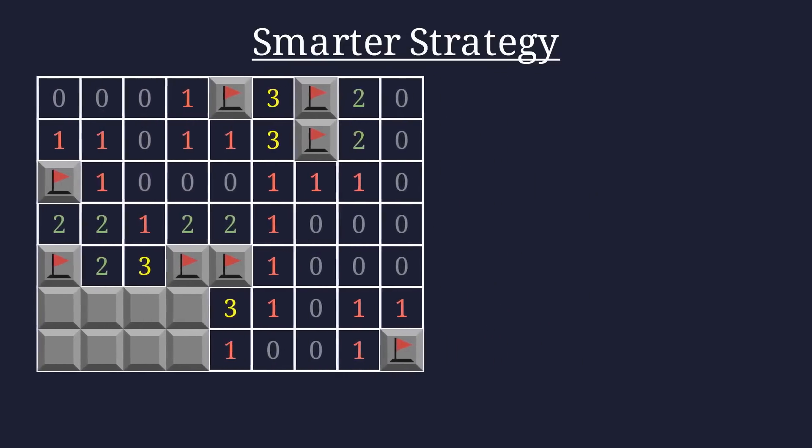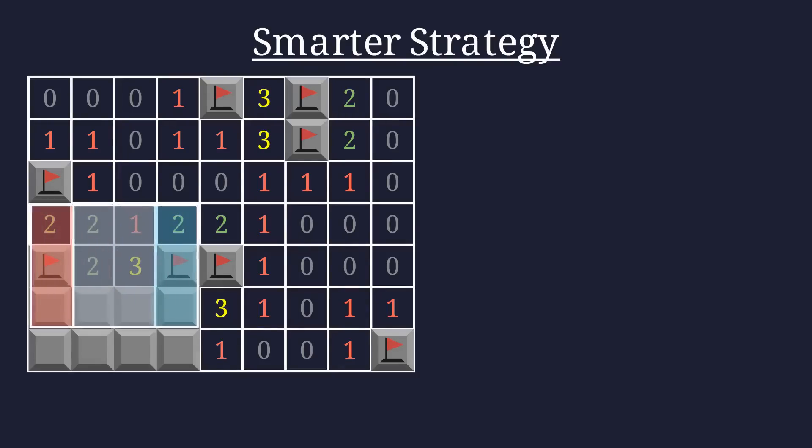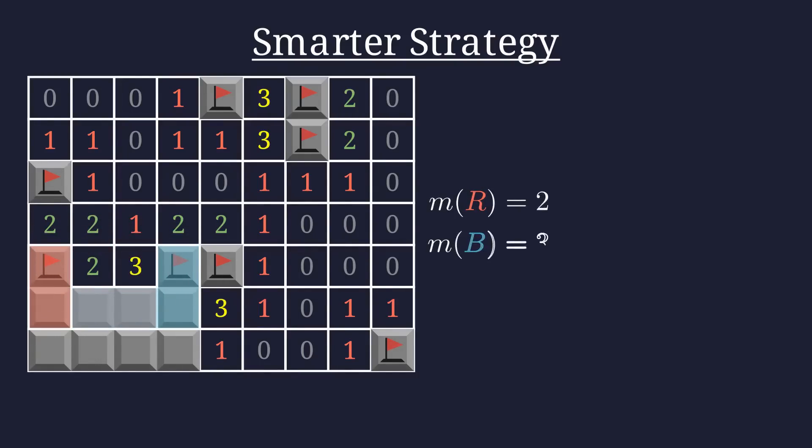In this new example, we have flags on both sides, which we'll need to consider. All we need to do to transform this into a form we do know how to solve is to just remove the flags, subtract off the number of flagged neighbors, and treat the flagged cells just like those we've stepped on. Bear in mind, removing these flagged mines decreases the mine counts for our two sets.